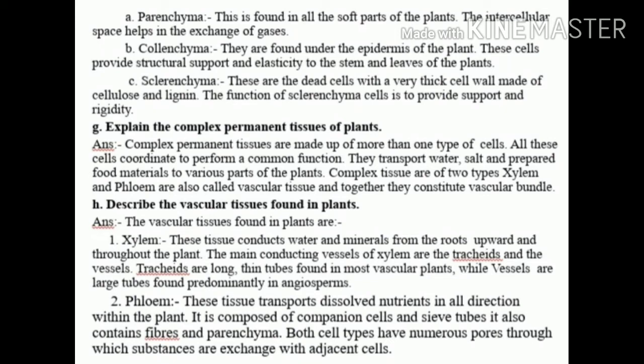Number b: Collenchyma — found under the epidermis of the plants. These cells provide structural support and elasticity to the stem and leaves of the plants. Number c: Sclerenchyma — these are dead cells with a very thick cell wall made of cellulose and lignin. The function of sclerenchyma cells is to provide support and rigidity.